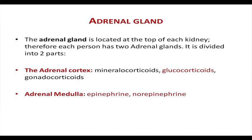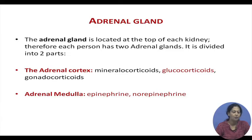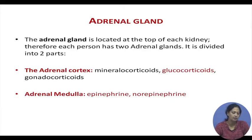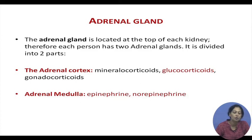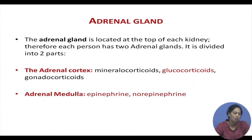The adrenal gland is located far from the brain, situated on top of each kidney. Each individual has two adrenal glands. The adrenal gland is divided into two parts: the adrenal cortex and the adrenal medulla. These two parts secrete different hormones. The adrenal cortex secretes mineralocorticoids, glucocorticoids, and gonadocorticoids. Gonadocorticoids are related to growth. The more important hormone related to stress is the glucocorticoids. The adrenal medulla secretes two primary hormones: epinephrine and norepinephrine, also known as adrenaline and noradrenaline, as they are secreted from the adrenal gland.